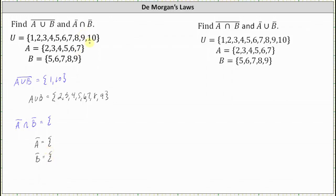Notice that set A contains the elements {2, 3, 4, 5, 6, 7}. Comparing this to the universal set, the complement of A, or not A, is the set containing the elements {1, 8, 9, 10}.